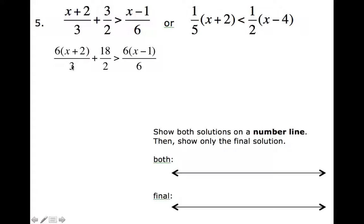6 divided by 3 is actually 2. So I'm going to have a 2 left over here and that 2 is going to multiply through those parentheses. So we had 6 divided by 3 is 2, and 2 times x is 2x, 2 times 2 is 4. 18 divided by 2 is 9. And then this 6 cancels away and we're left with just x minus 1.